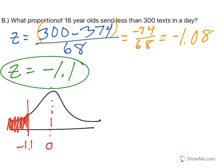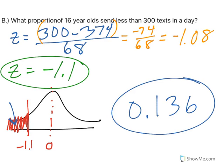And that makes it nice and easy because the table gives us area to the left. So the area to the left is .136. So you've got a 13.6% chance of finding someone who sends less than 300 texts in a day.